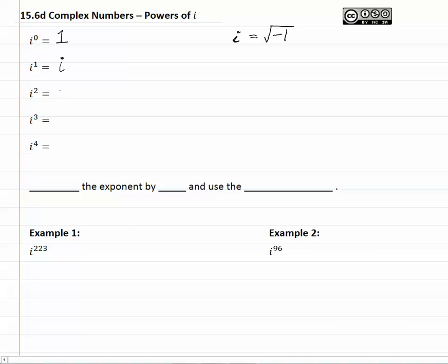i to the second is where it starts getting a little different. If we look at i squared, that would look like this. And so if we multiply the square root of negative 1 to itself, we do indeed get negative 1, which is what i to the second is.